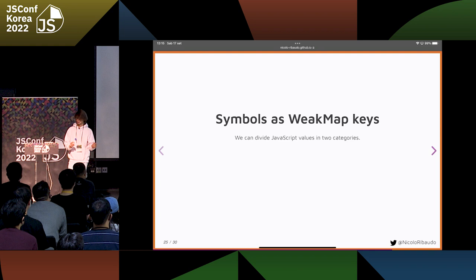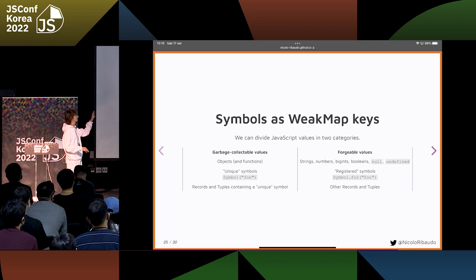What does it do? Well, the name might be self-explanatory. We can divide JavaScript values into categories: values that can be garbage collected and values that cannot. I'm calling them forgeable values, and I'll explain why in a moment.